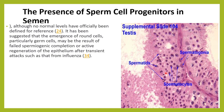Sometimes it becomes difficult to identify them correctly — whether these could be germ cells or WBCs. In the testis, you can see the various levels of differentiation of the spermatogonia, spermatids, and spermatocytes. Though no normal level has been officially defined for reference, it is suggested that the emergence of these round cells, particularly germ cells, may be due to failed spermiogenic completion or active regeneration of the epithelium after transient attacks of certain infections like influenza, etc.